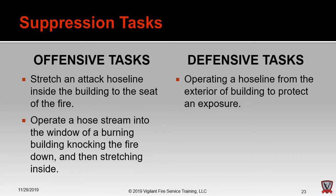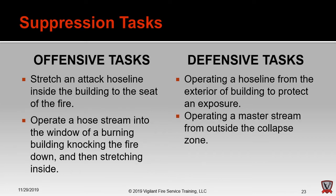Defensive suppression tasks look different: operating a hose line in an alleyway to protect an exposure building next to the one on fire, or operating a master stream from outside the collapse zone. It's critical that if our strategy is defensive, we should not perform tasks with undue risk. Operating master streams in defensive mode requires positioning outside the collapse zone.